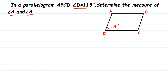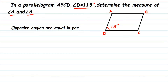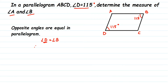To find angle B, we know that in a parallelogram opposite angles are equal. So angle B will also be equal to angle D. Since angle D is 115 degrees, angle B will also become 115 degrees.